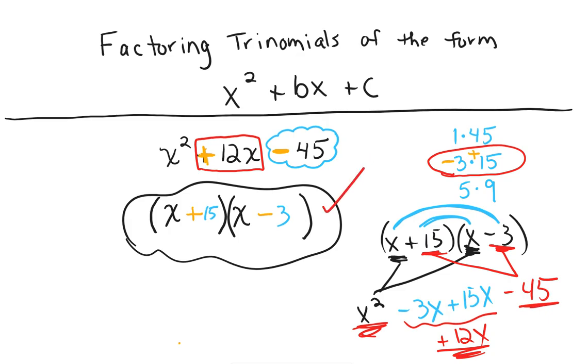And that is factoring trinomials of the form x squared plus something x and plus something. The difference is, what's the difference between the four situations? It has to do with the signs here.